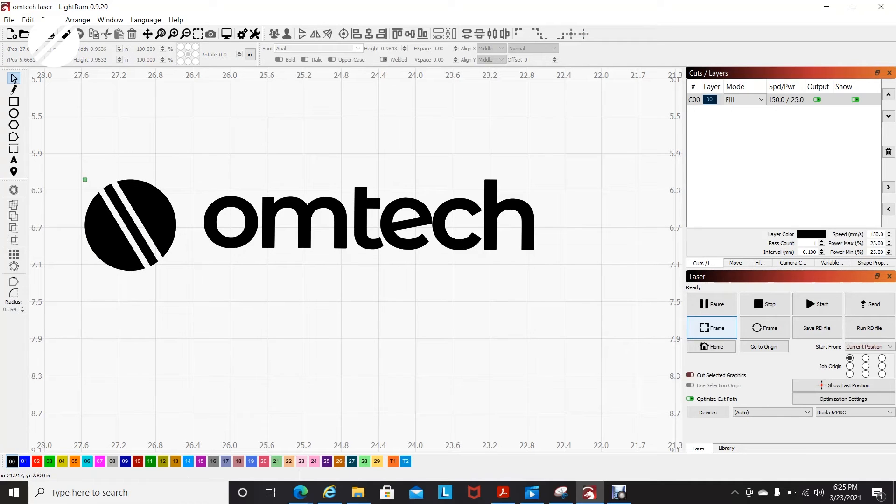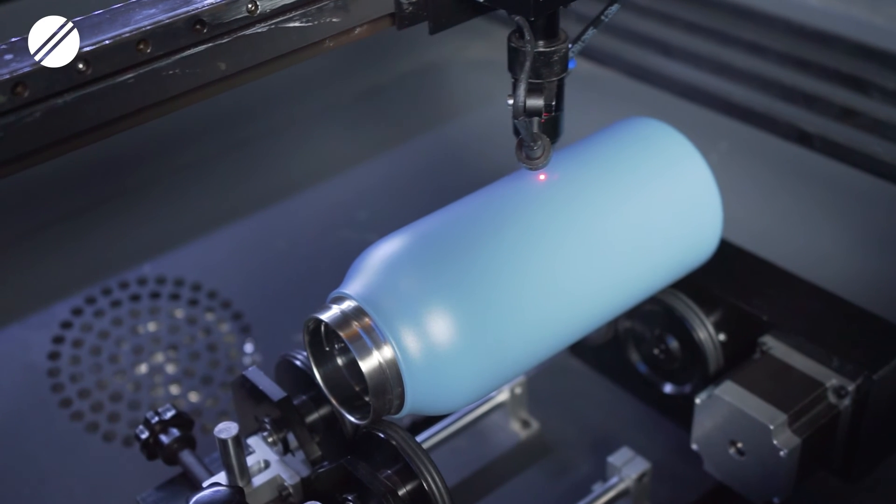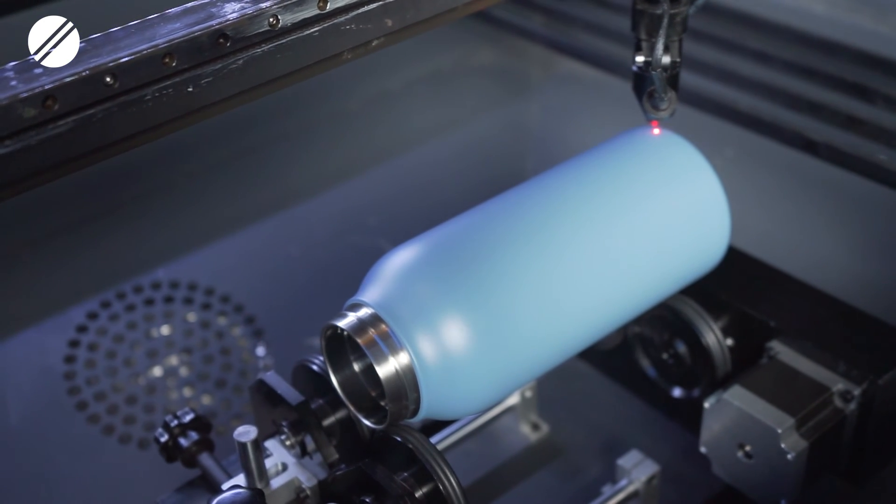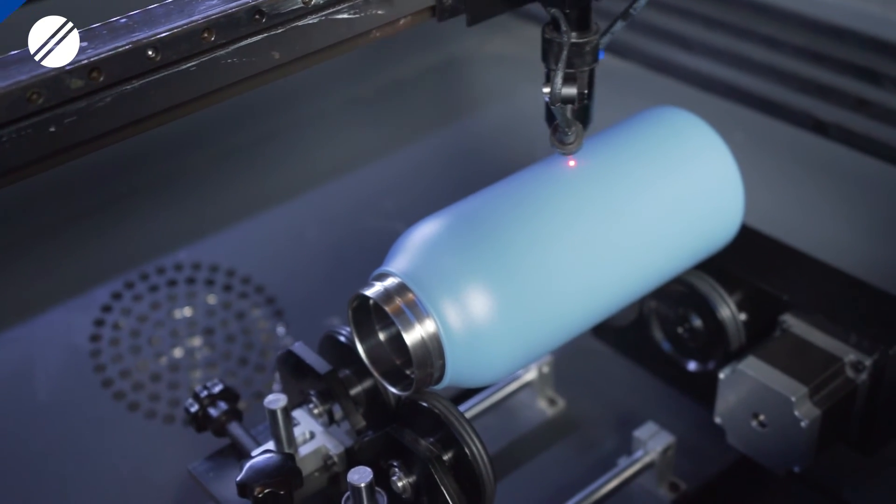From here, you will be able to trace your image on the tumbler by pressing frame. You will be able to see the exact area where the laser will engrave the project on your tumbler.